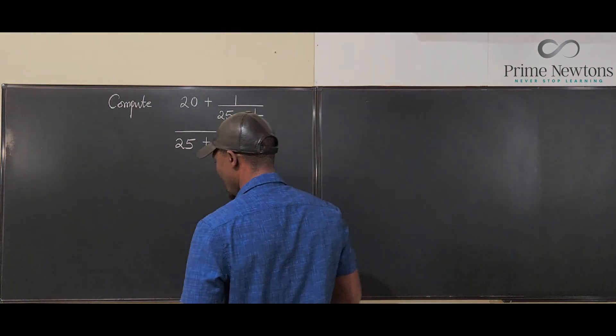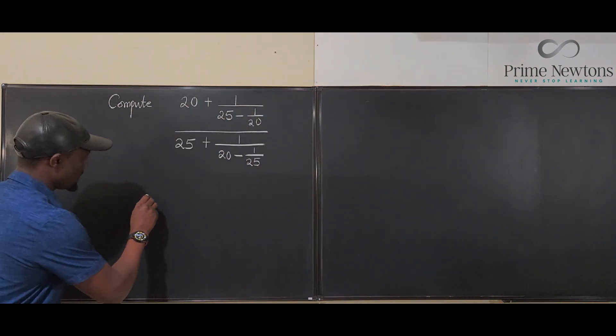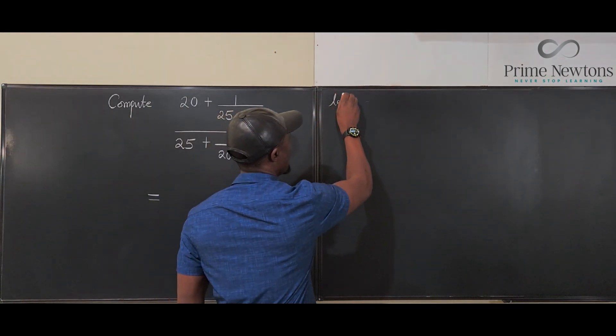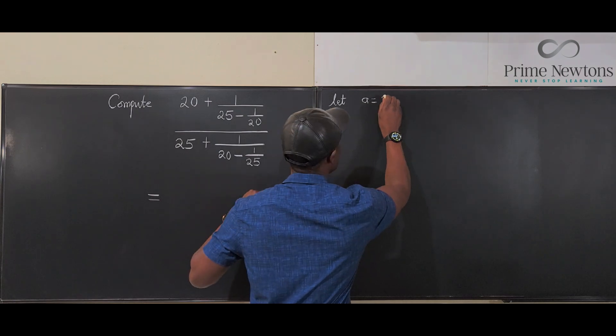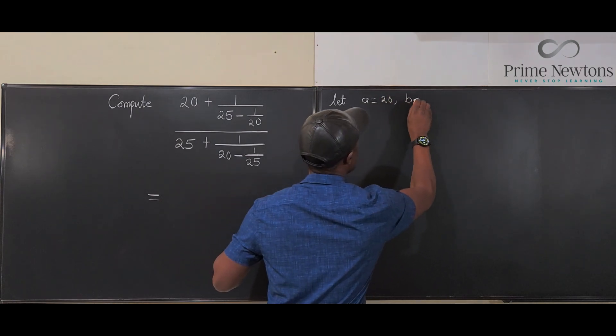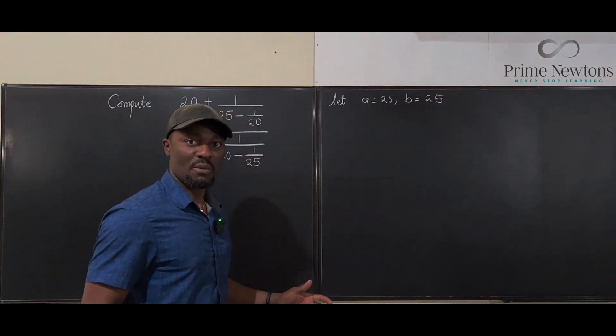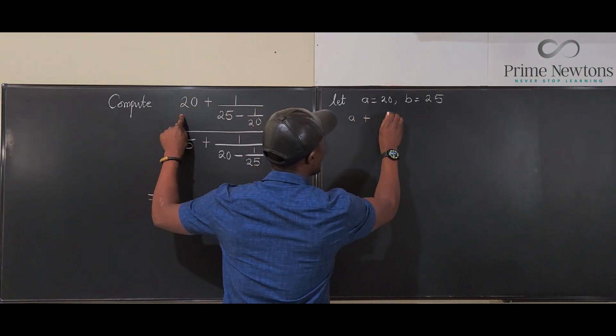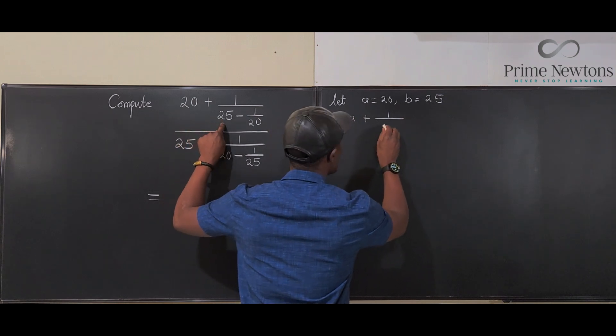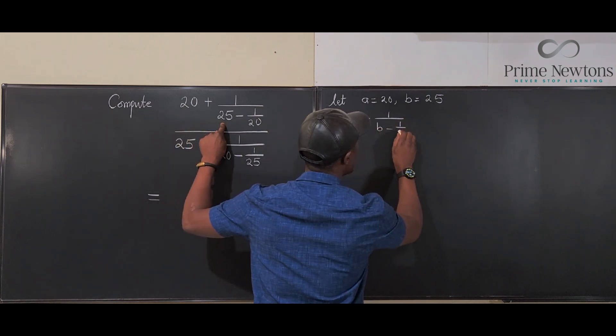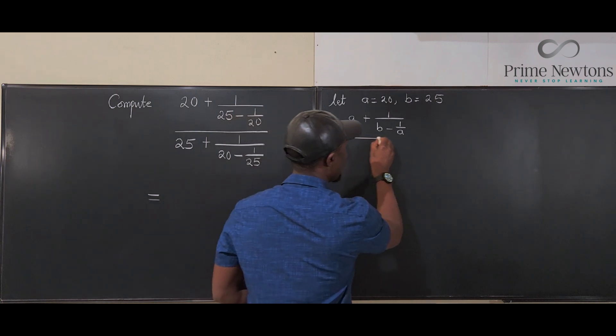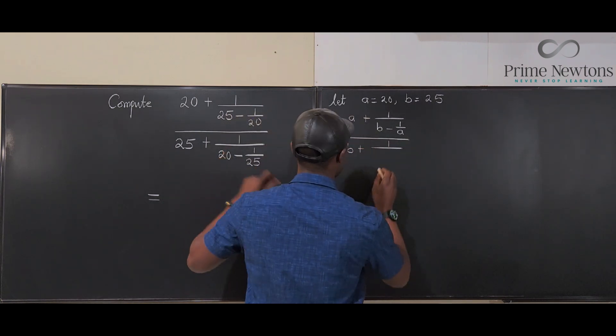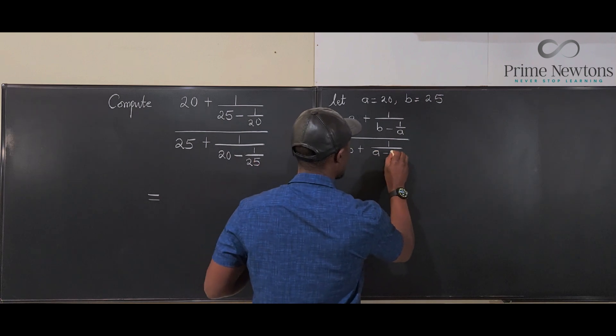So let's do it here. Let A be equal to 20 and B be equal to 25. So the expression we have is going to be A plus 1 over B minus 1 over A, divided by B plus 1 over A minus 1 over B.